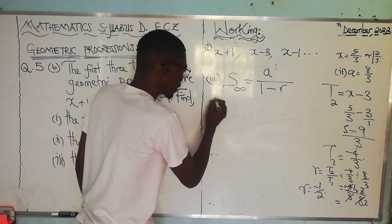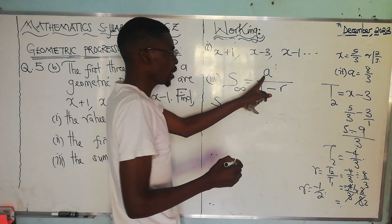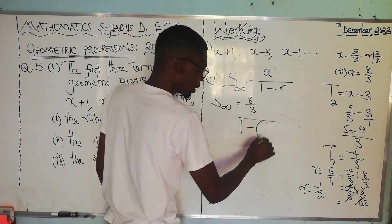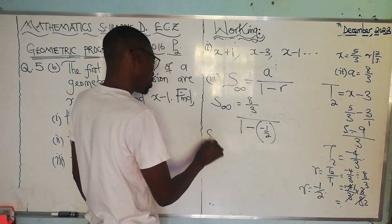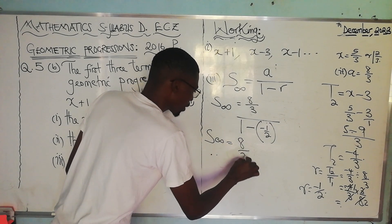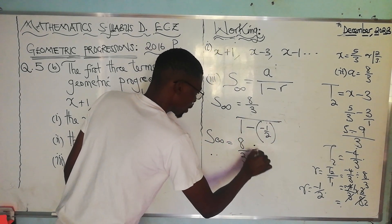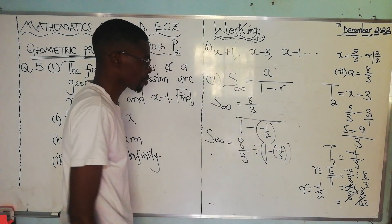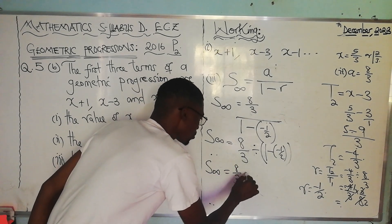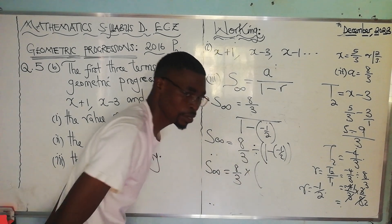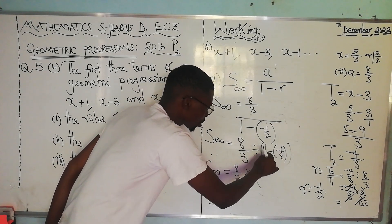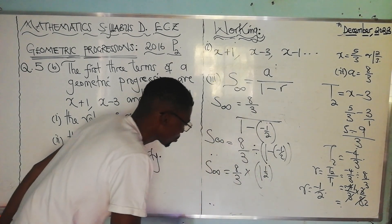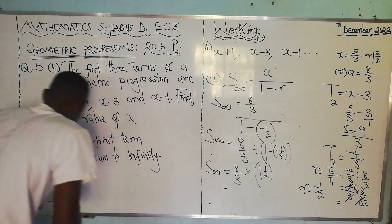The sum to infinity is a over 1 minus r, which is 8 over 3 divided by 1 minus negative 1 over 2. Now 1 minus negative 1 over 2 equals 1 plus 1 over 2, which equals 3 over 2.